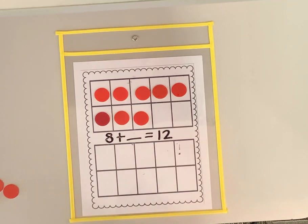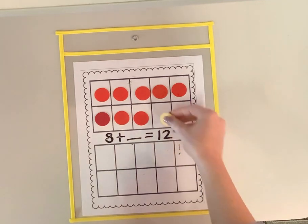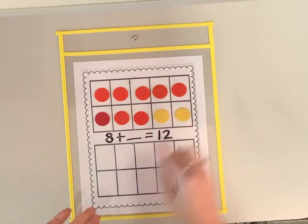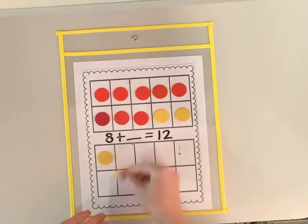Eight pieces of paper. I added more paper to my stack. And now I have 12. So now I'm going to put yellow counters down and count up until I get to the number 12. I'm going to start at eight and count up. Eight, nine, 10, 11, 12.